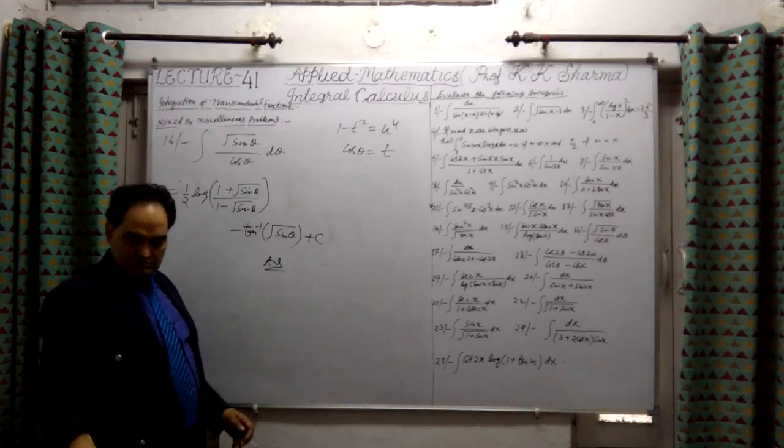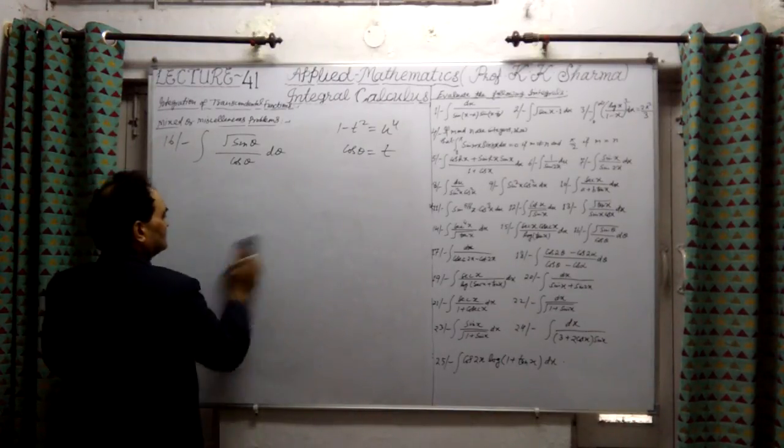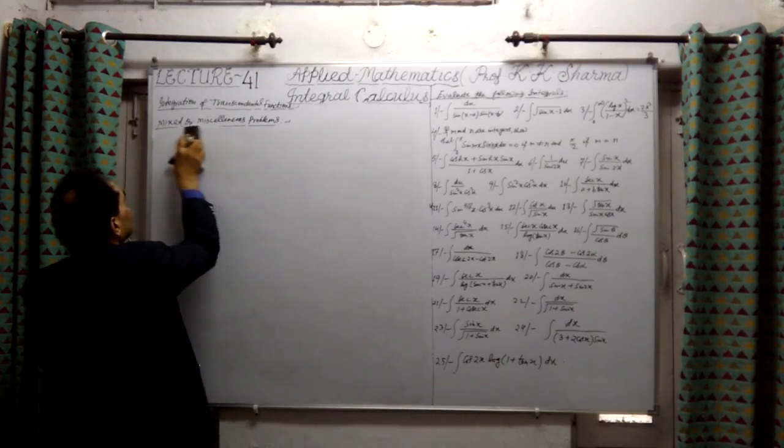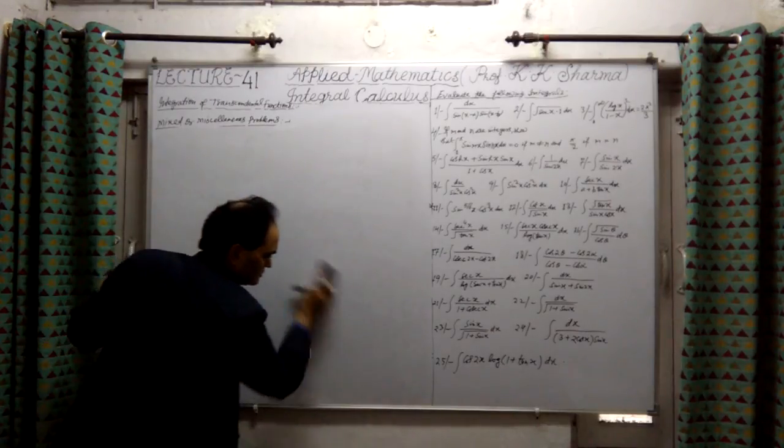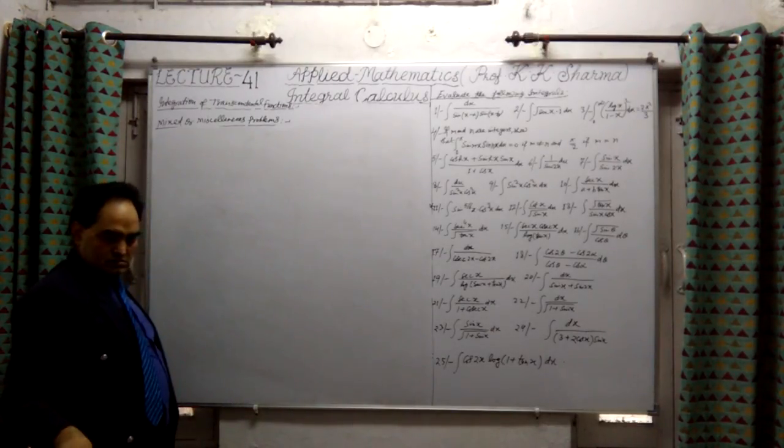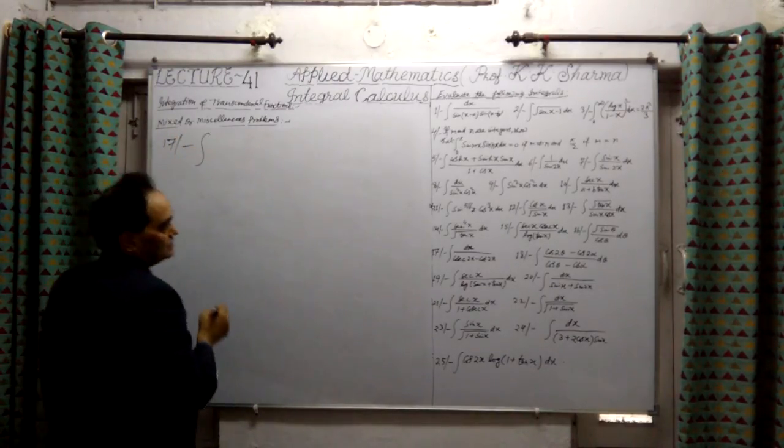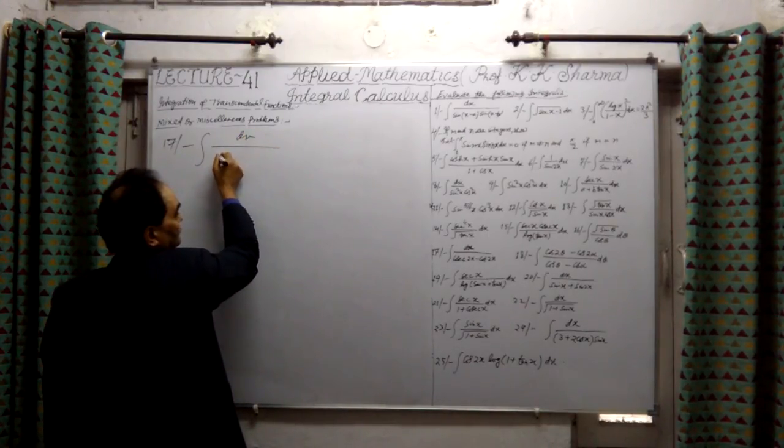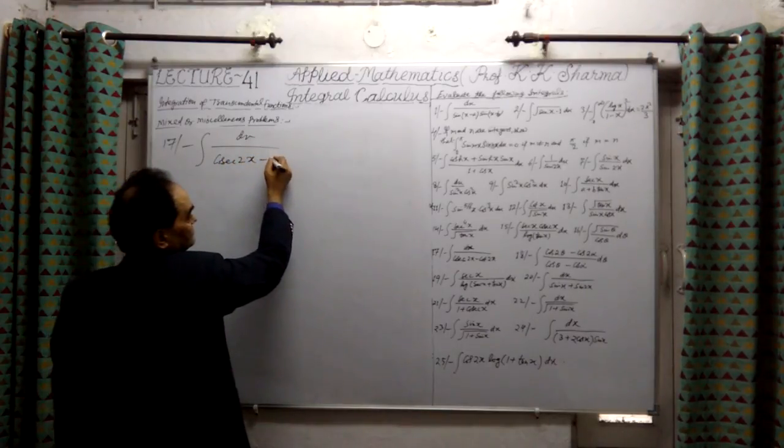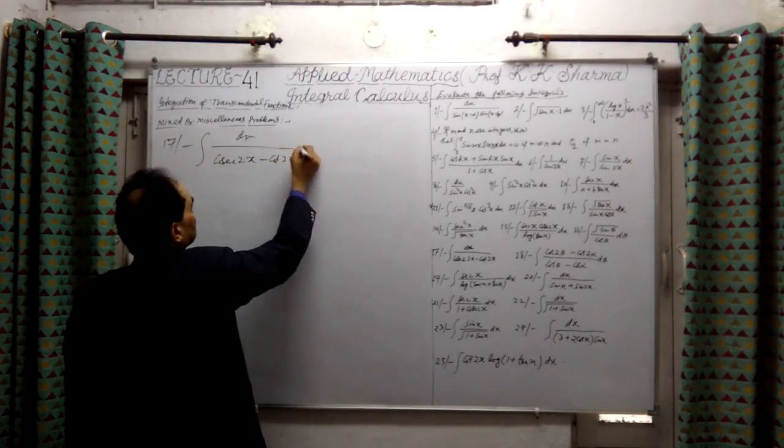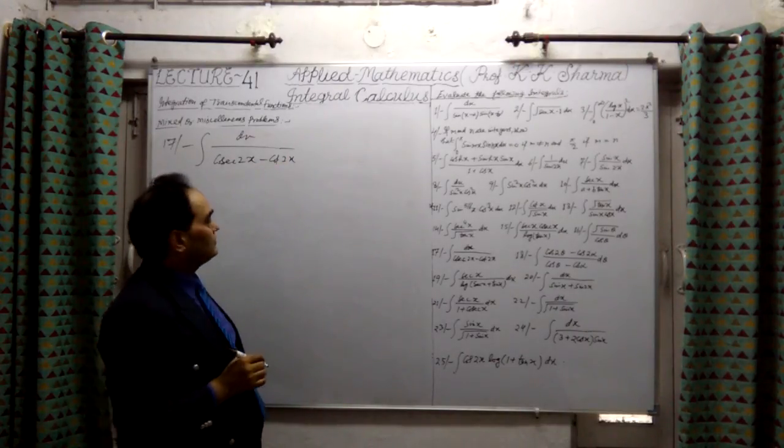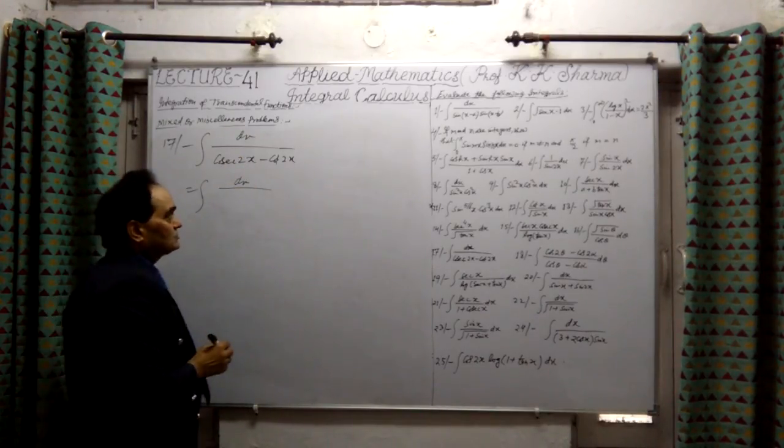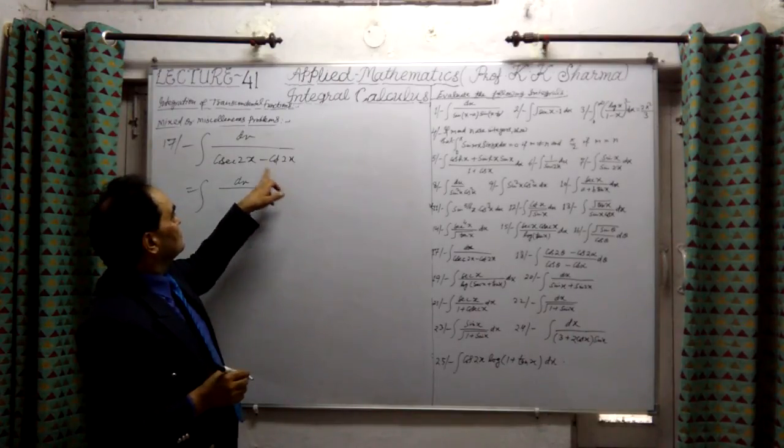Let us talk about, solve it in the next question. Time of integration is dx upon cosec 2x minus cot 2x. So this is the value, so we can convert this into dx upon cosec 2x is 1 by sin 2x.